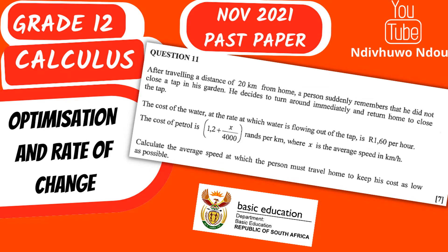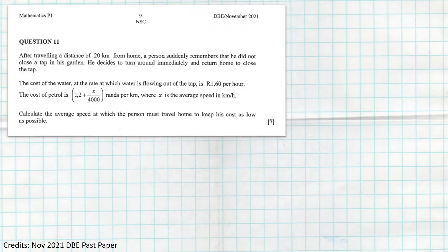Hi everyone, thank you very much for joining us today. Today we're going to be focusing on Grade 12 calculus optimization and rate of change. We're going to be focusing closely on the November 2021 past paper, specifically question 11, which required the application of calculus optimization and rate of change.